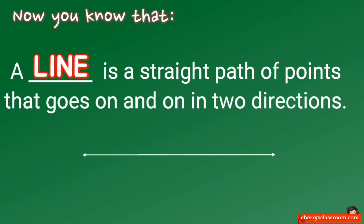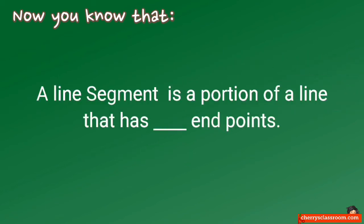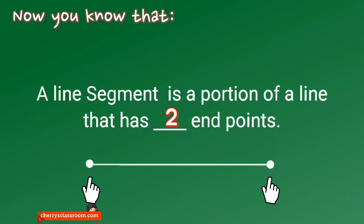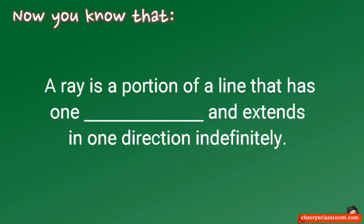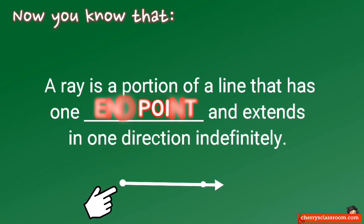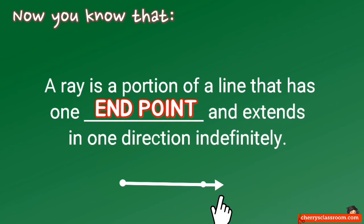A line is a straight path of points that goes on and on in two directions. A line segment is a portion of a line that has two endpoints. A ray is a portion of a line that has one endpoint and extends in one direction indefinitely.